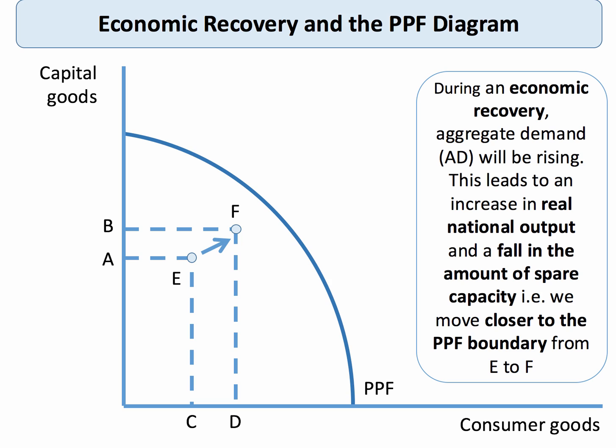When thinking about the output gap it helps to use a production possibility frontier diagram, the PPF. So let's say we start off at point E, a long way inside the boundary, and there's an increase in aggregate demand. This will lead to an expansion of real GDP as we move up the aggregate supply curve. As the economy recovers from recession the amount of spare capacity — spare labour, spare land, spare capital machinery — will fall. So as we move closer to the PPF boundary, the degree to which the economy has spare underutilized resources is diminishing.